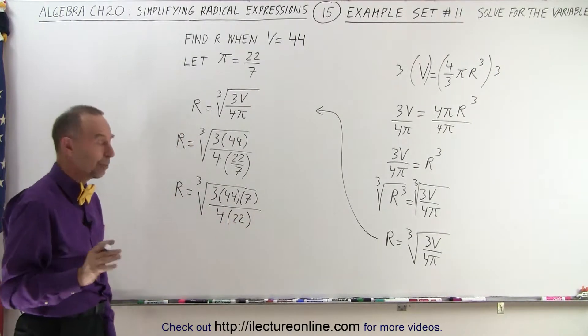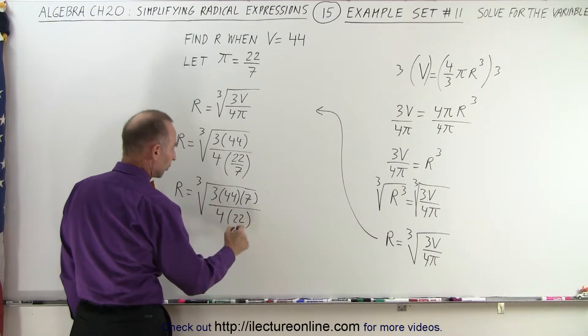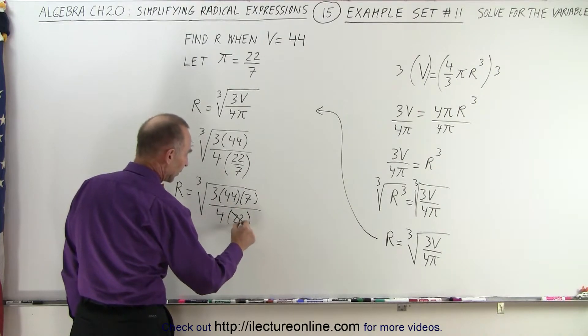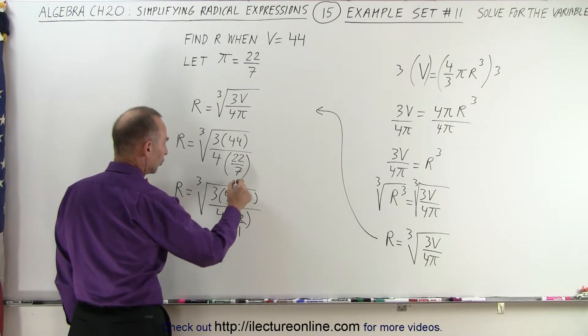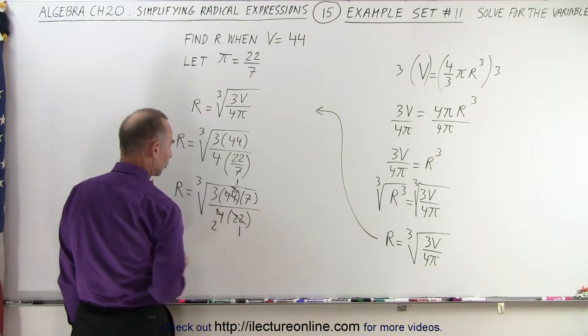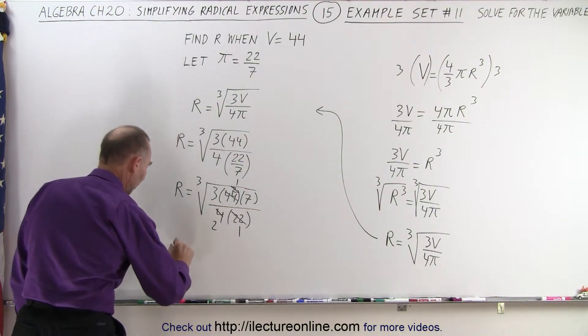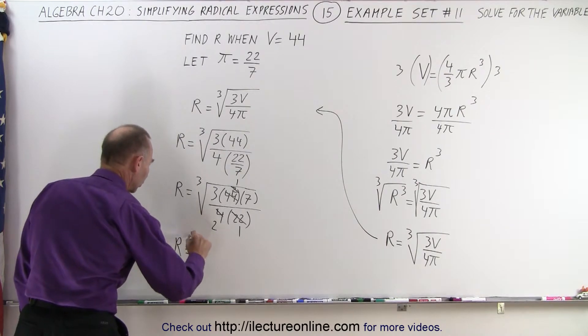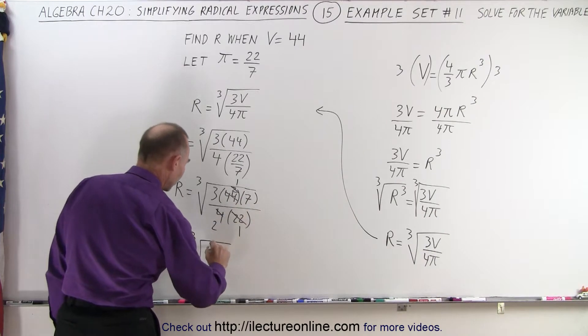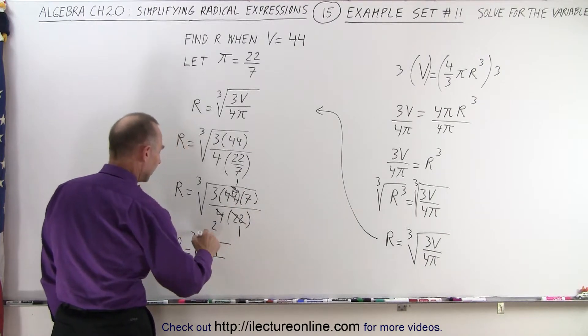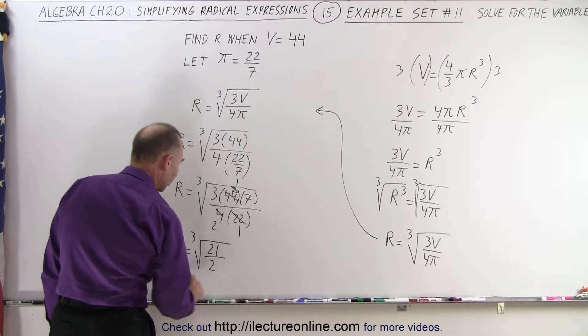Now we need to simplify things. First of all, 22 and 44, they simplify. So this becomes 1, and this becomes 2. And a 4 and a 2, the 2 becomes a 1, and the 4 becomes a 2. So now let's see what we have left. r is equal to the cube root of 3 times 7, which is 21, divided by 2.